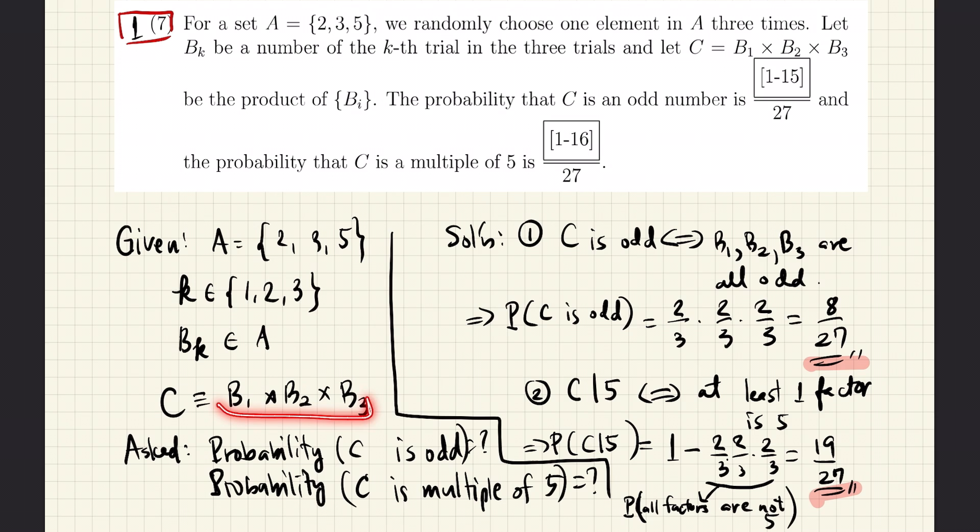For this product to be odd, all three numbers must be odd. And therefore, for B1, we must not pick 2. For B2, we must not pick 2. And for B3, we must not pick 2 again.